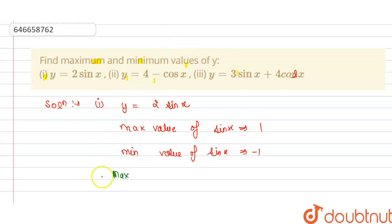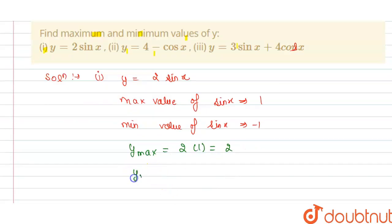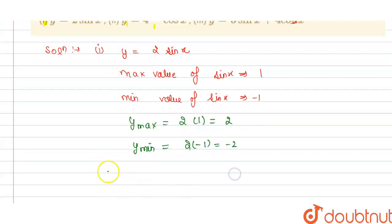So we can write: y max equals 2 times sine x, where maximum value is 1, so this will become 2. And y minimum is 2 multiplied by minus 1, that is minus 2. Now we solve for the second part.